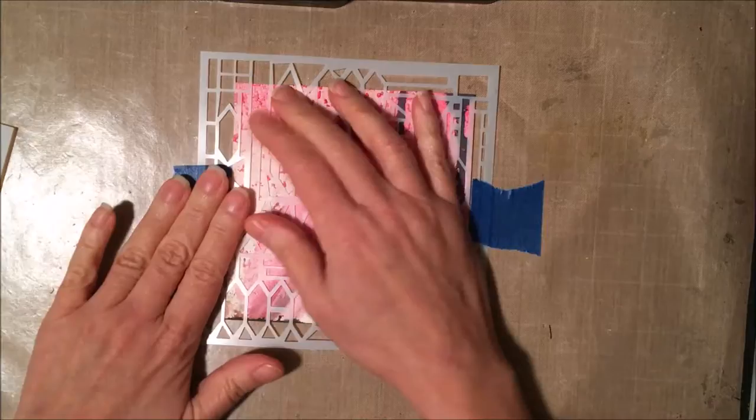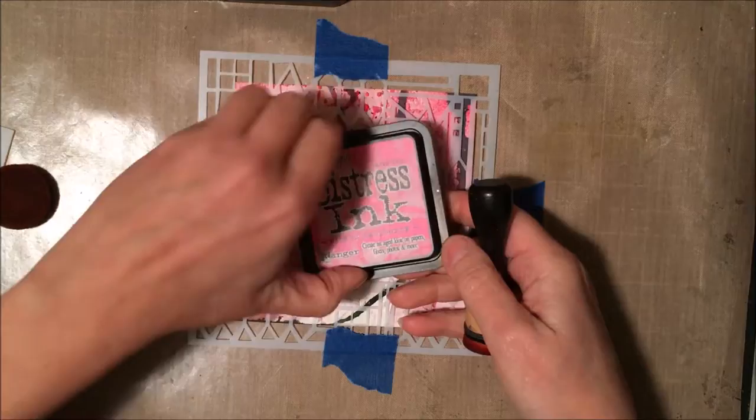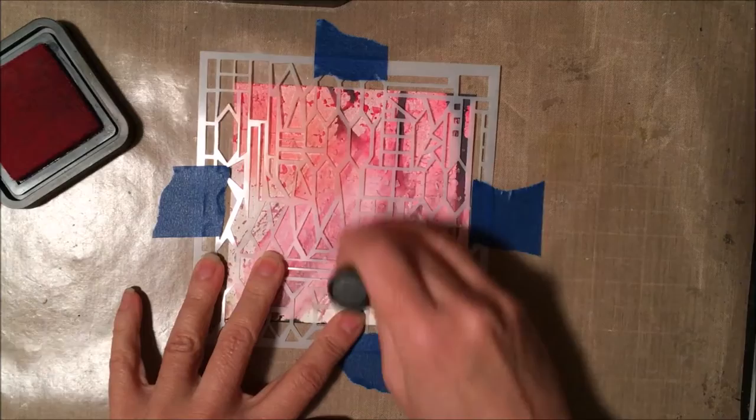So I'm starting by attaching the paper and the stencil to a non-stick craft sheet using painter's tape. And the reason I'm doing that is that's a very thick paper and there was a little bit of warping that was going on there. And so I wanted to make sure that stayed still and wasn't moving around.